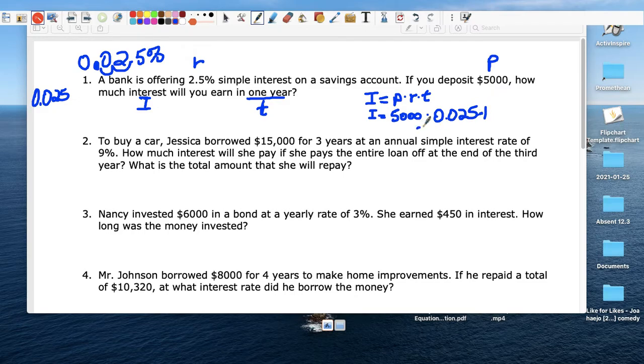And time is 1 here. So it times 1. So you can put that in your calculator. You get 5,000 times 0.025 times 1, which is 125. You earn $125. If you deposit $5,000 for a year in a bank that pays 2.5%, you earn $125. That's how much money you would make.